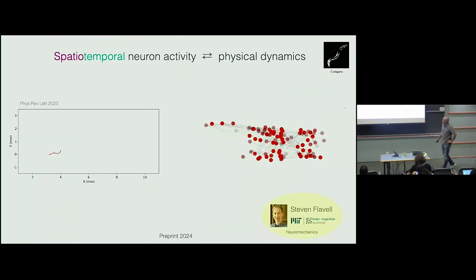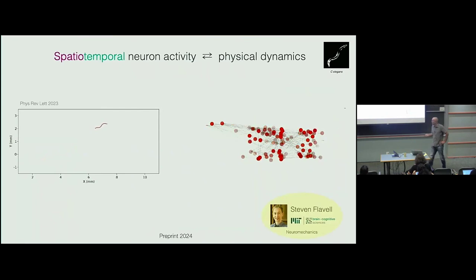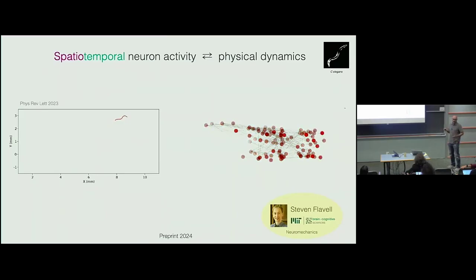A very different system biologically, but geometrically somewhat similar: here you can see a worm crawling, video taken by Stephen Flavell's lab. We've already extracted the midline. But the really interesting part is the additional data we get — these are neurons, about half of the neurons the worm has. Stephen's lab can record the activity of neurons as the organism moves. One of the first questions is: given just a few neurons known to be responsible for locomotion, can we predict what the behavior would look like — the physical dynamics — given neuron patterns?